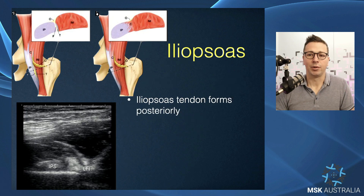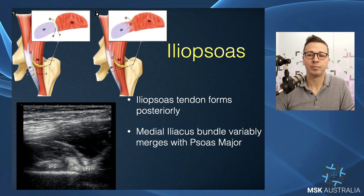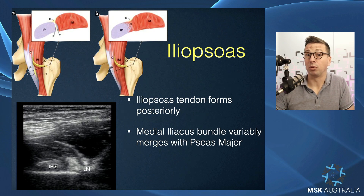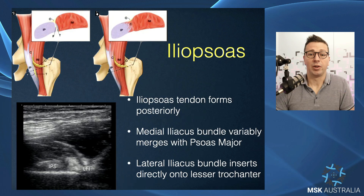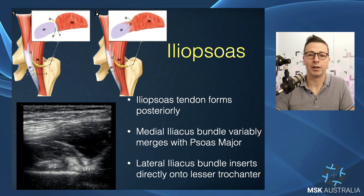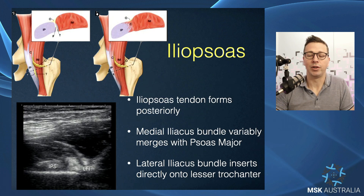The iliopsoas tendon forms at the posterior aspect of the muscles and runs through the back of the pelvic brim. The medial iliacus bundle variably merges with psoas. Sometimes you can have multiple slips, and sometimes the psoas component doesn't even form the true conjoint tendon — it has its own tendon all the way down on the lesser trochanter.